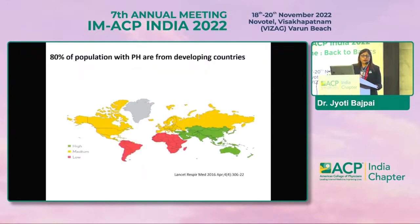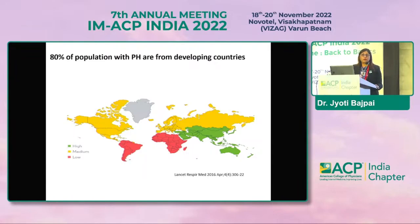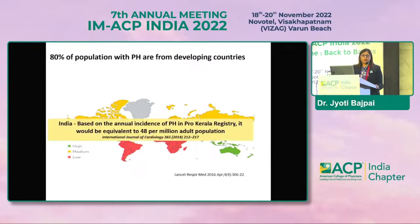This is a beautiful paper from Lancet Respiratory Medicine Journal published in 2016 about the global prevalence of pulmonary hypertension. There are three color-coded areas: green areas represent countries with high prevalence, yellow areas represent medium prevalence, and orange areas represent low prevalence. Eighty percent of the population with PH from developing countries is due to lung and heart diseases. A paper from the Kerala registry by Dr. Hari Krishnan in India showed 48 per million adult population with pulmonary hypertension.